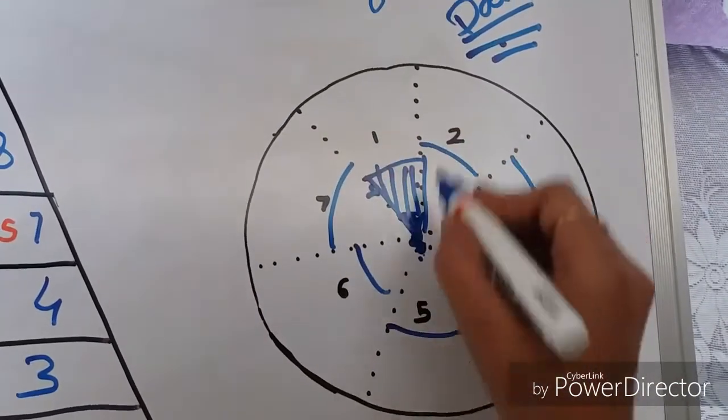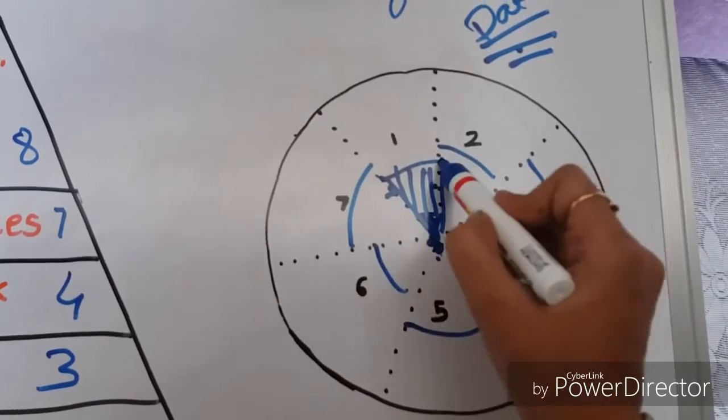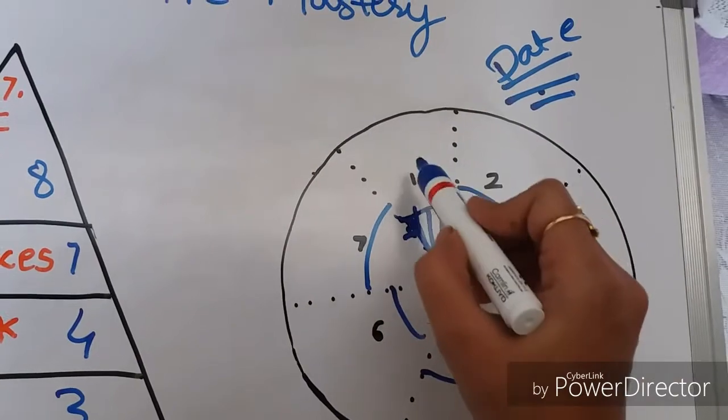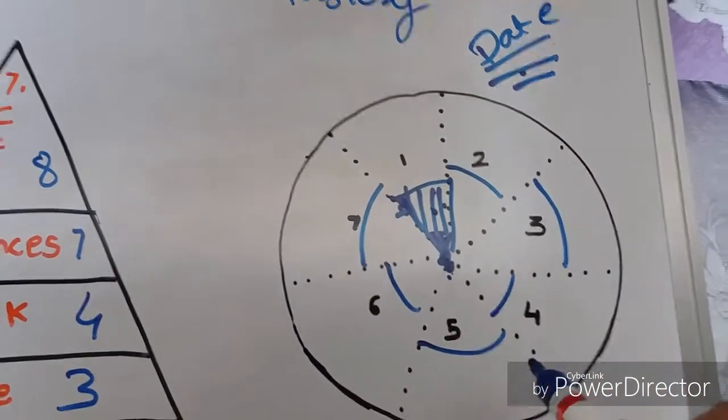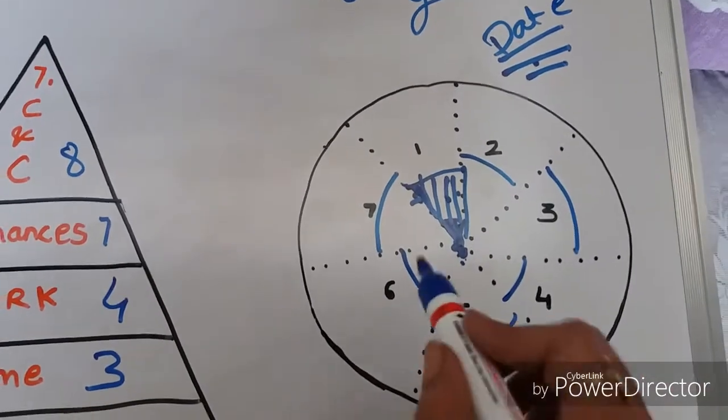Every section has 10 dots. So if I connect 5 from here and 5 from here, I am giving 5 to my physical body today in this first section. Similarly 2nd, 3rd, 4th, 5th, 6th, 7th section. So I am grading myself.